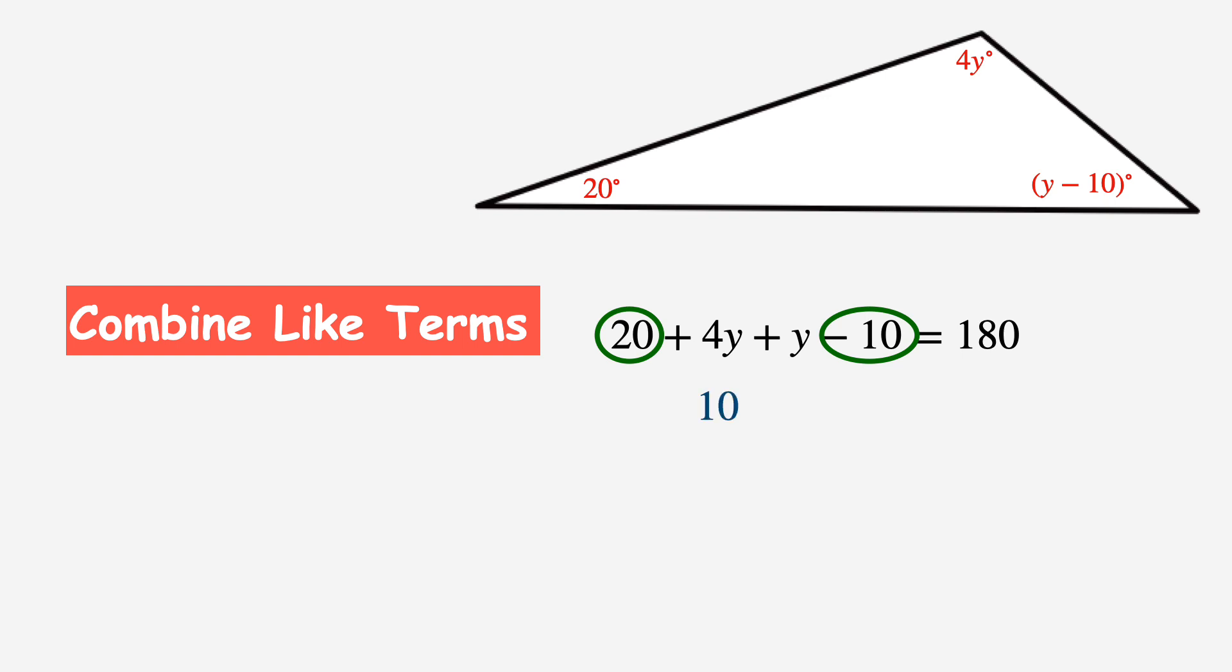Looking back at the equation, I see two more like terms, positive 4y and positive y. And positive 4y plus positive y equals positive 5y, and I'll bring down the equals 180.